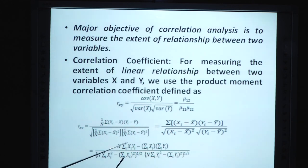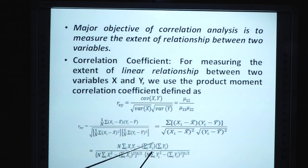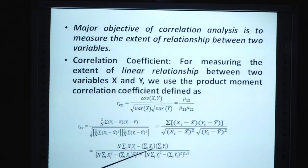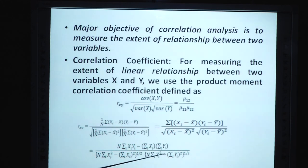Covariance का formula है: (1/n) × Σ(x_i − x̄)(y_i − ȳ)। Variance का formula: (1/n) × Σ(x_i − x̄)² और (1/n) × Σ(y_i − ȳ)²। इन सबको put करके formula बनता है: r = [n·Σx_i·y_i − Σx_i·Σy_i] / [sqrt(n·Σx_i² − (Σx_i)²) × sqrt(n·Σy_i² − (Σy_i)²)].